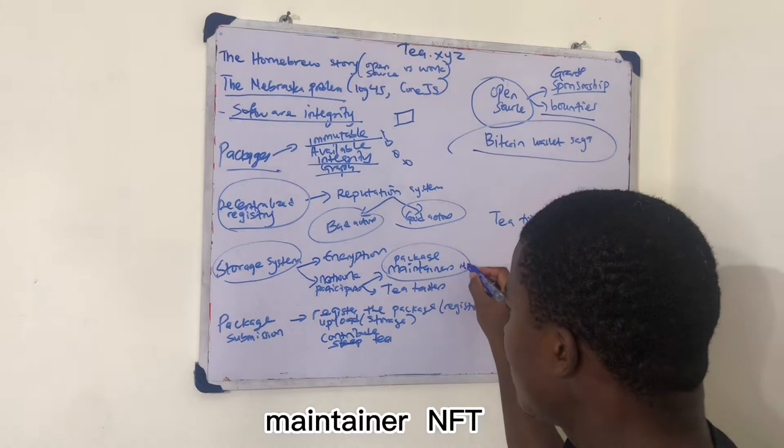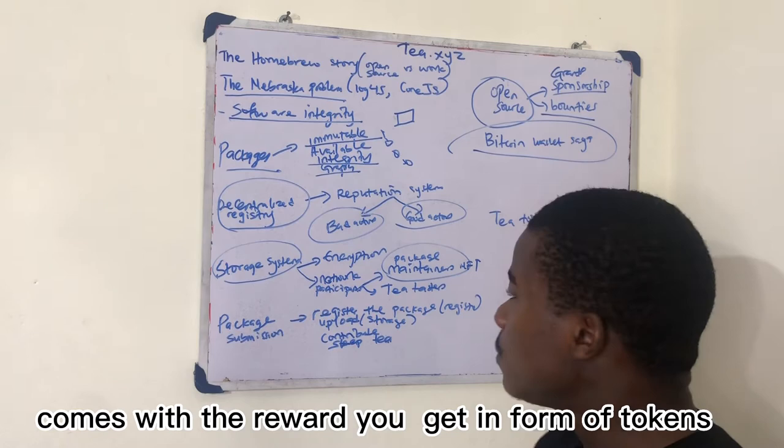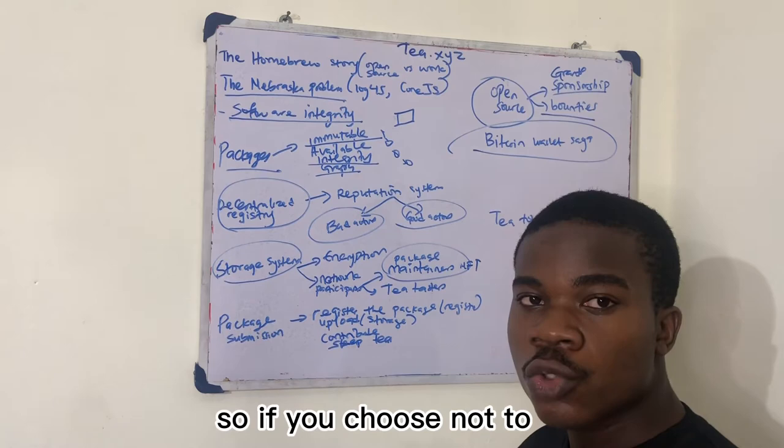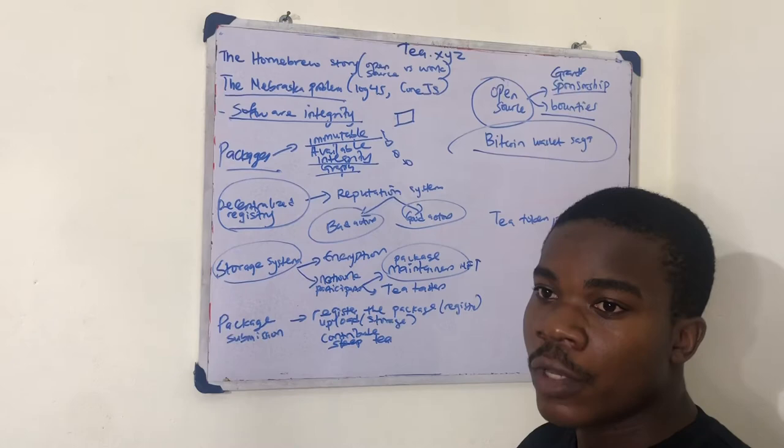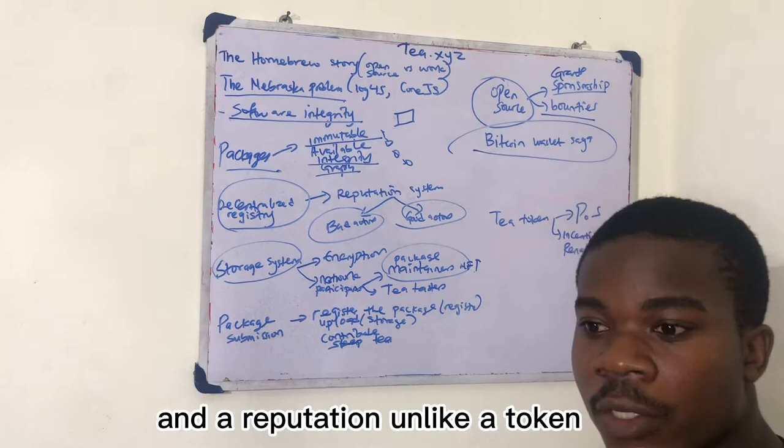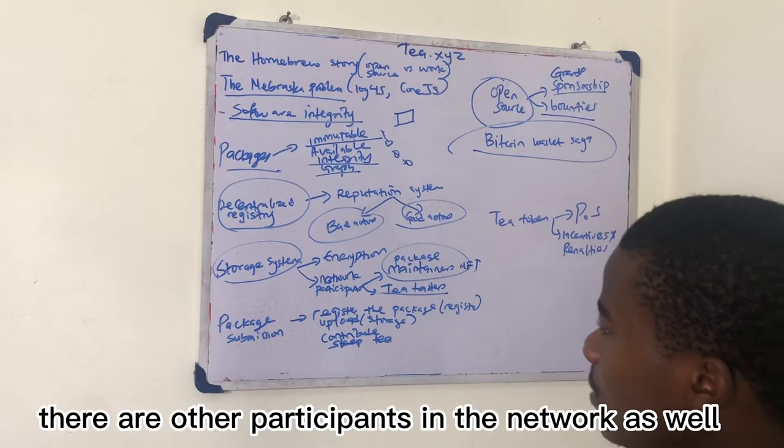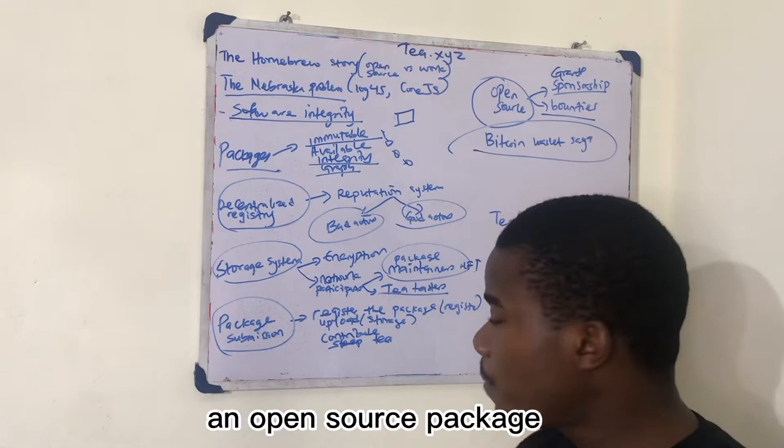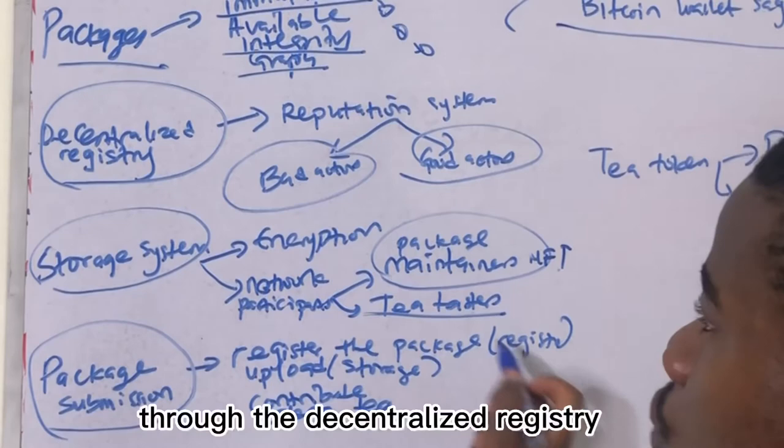So network participants - we have package maintainers. If you want to maintain a package, you will get a maintainer NFT. So this maintainer NFT comes with two things: it comes with the reward you get in form of tokens for holding the NFT, and also reputation. So if you choose not to maintain a package anymore, you can transfer the package to somebody else, but you cannot transfer the NFT because NFT represents reputation. And reputation is unlike a token that you can buy. And then you have T-testers who are now participating in the NFT.